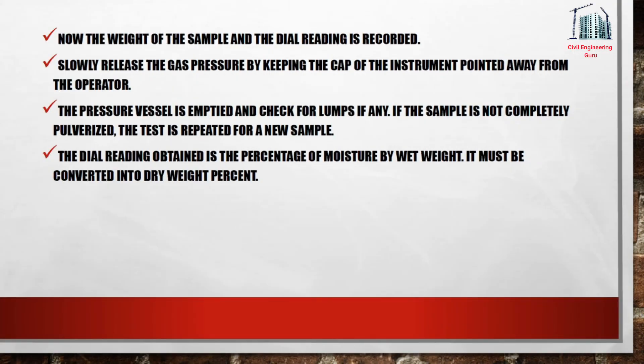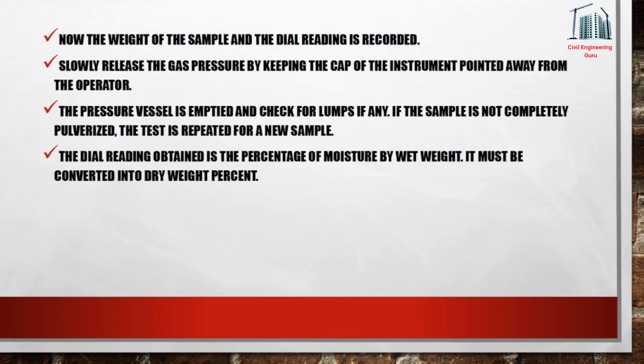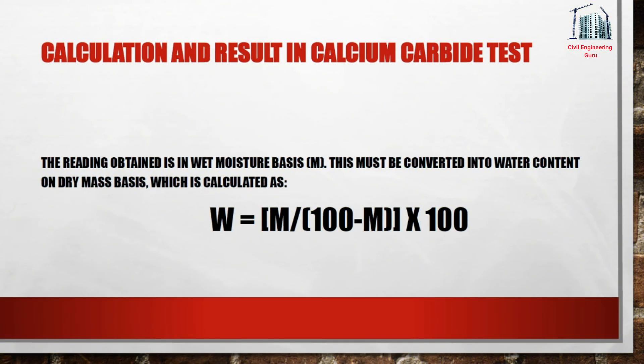The weight of the sample and the dial reading are recorded. Slowly release the gas pressure by keeping the cap of the instrument pointed away from the operator. The pressure vessel is emptied and checked for lumps. If the sample is not completely pulverized, the test is repeated with a new sample. The dial reading obtained is the percentage of moisture by wet weight, which must be converted into dry weight percent.